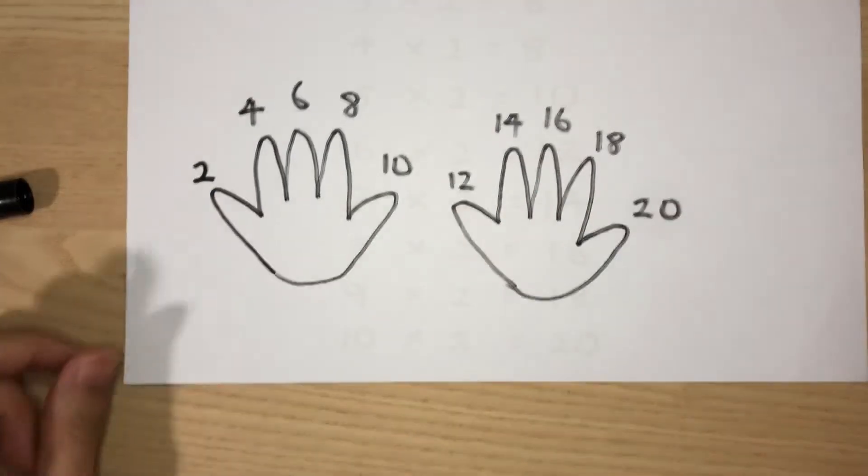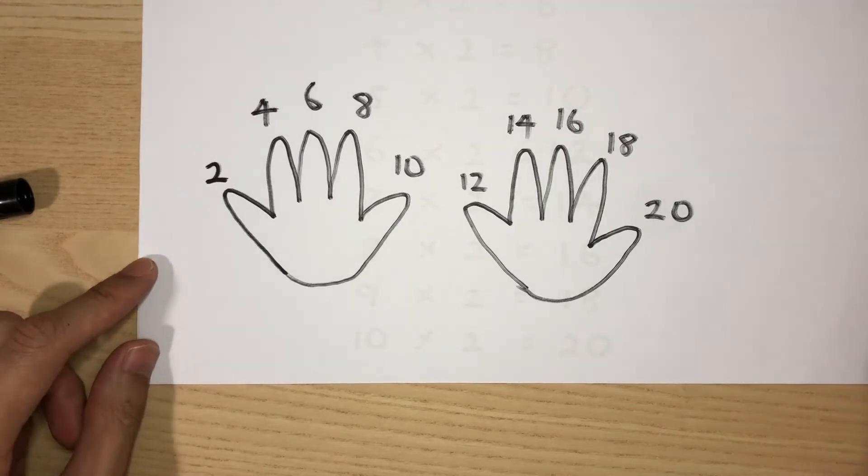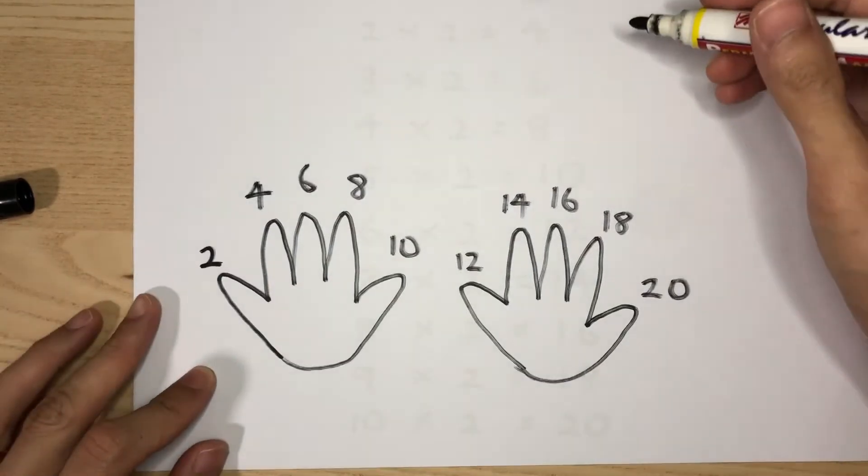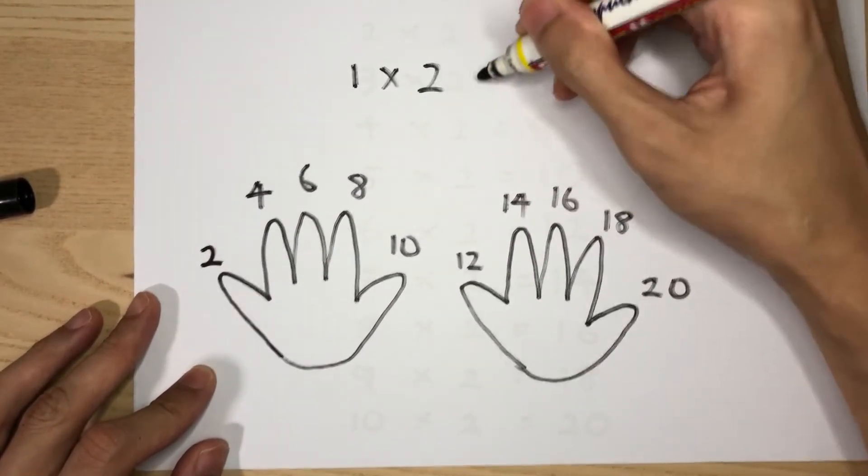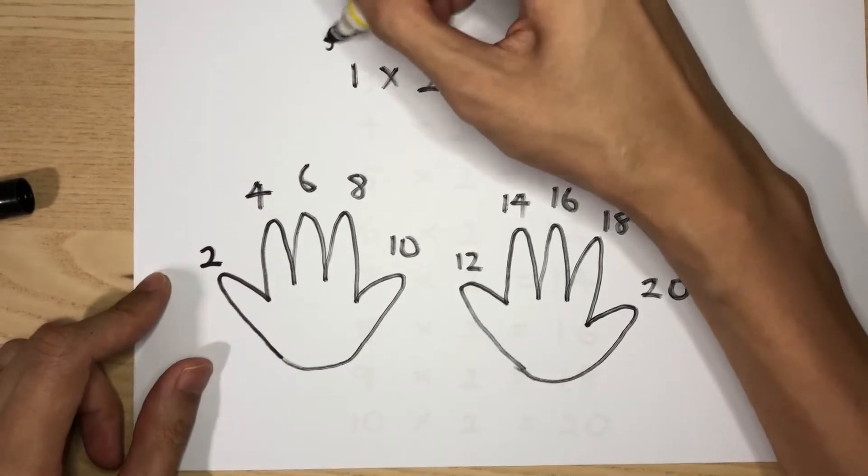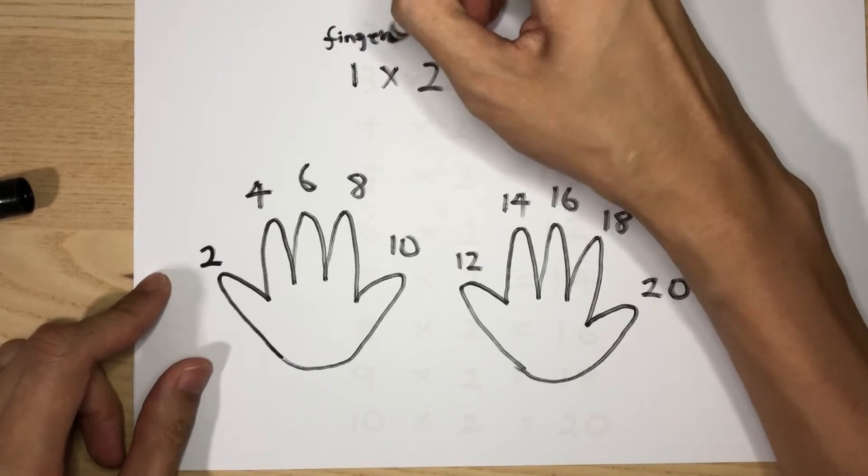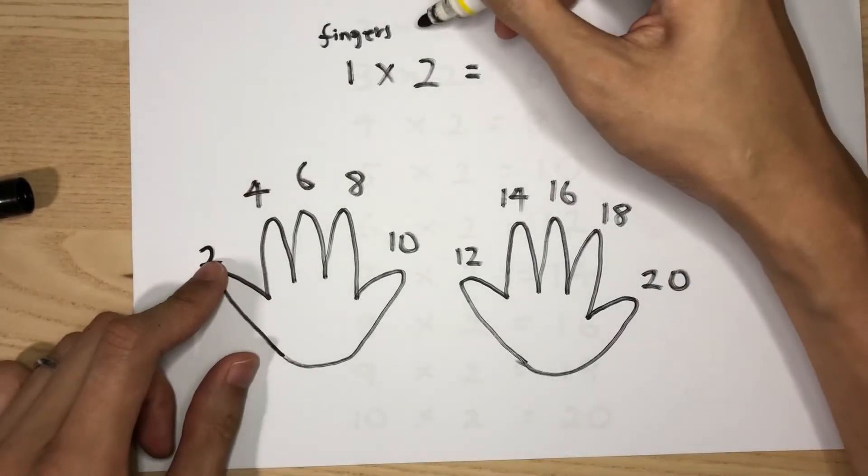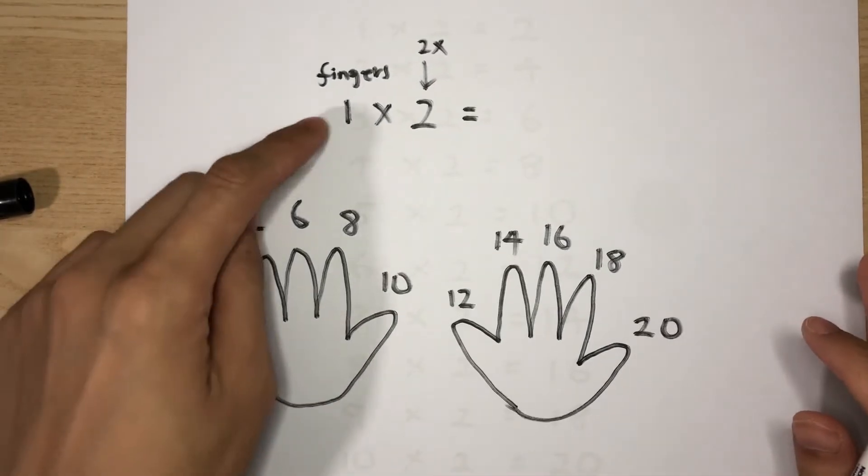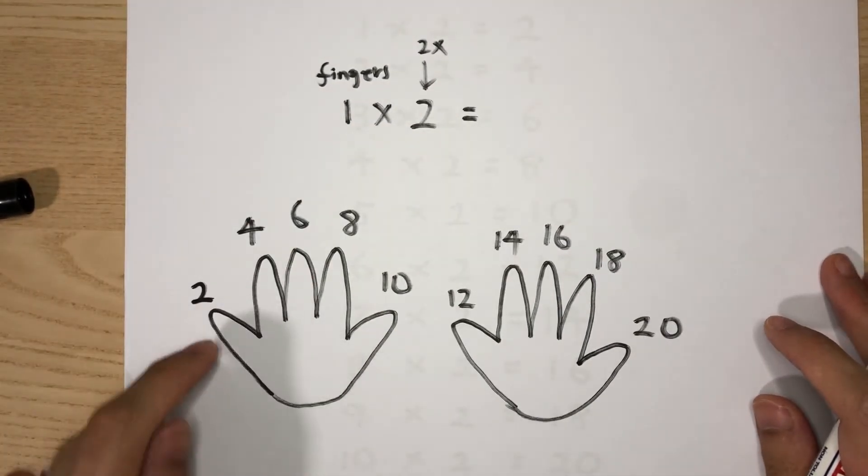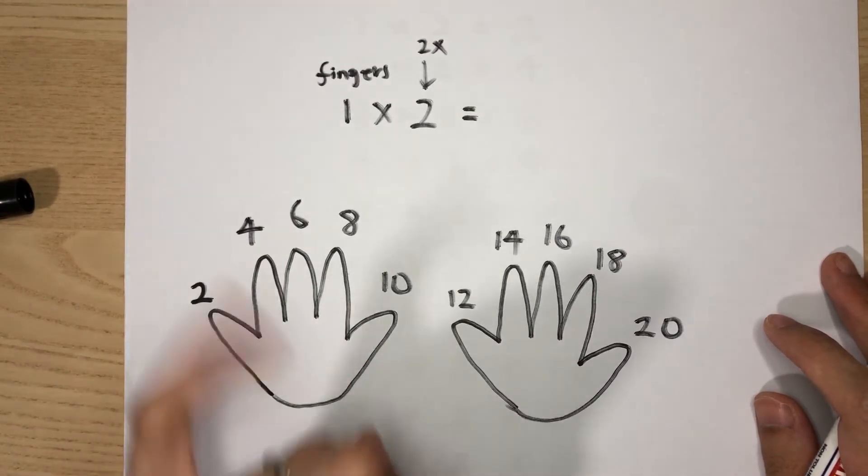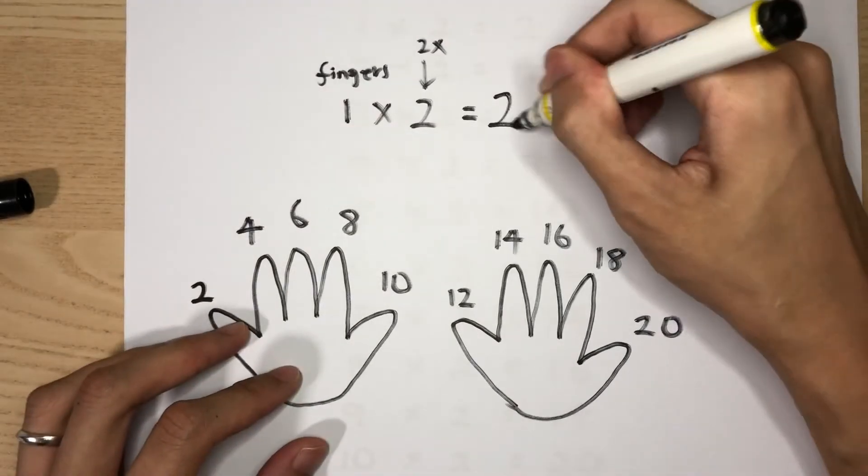If I ask you for, let's say, one times two, what is the answer? Very simple. You look at the number of fingers here. This is the finger and this is the two times table. So let's do the two times table until finger number one, which is this finger. One times two is two, so the answer is two.